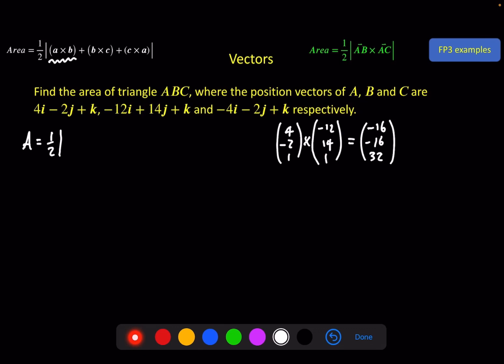And then we've got b cross c. So we've got -12, 14, 1 cross -4, -2, 1. And the top one is 14 minus -2. Middle one, -4 minus -12. And the bottom one, 24 minus -56, 80. That's this one.